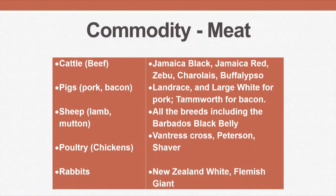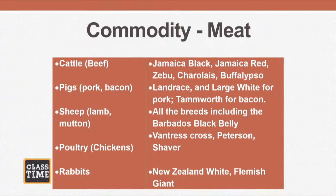The animals used for meat: we have our beef cattle — Jamaica Black, Jamaica Red. For pigs, pork and bacon — we have the Tamworth for bacon and the Large White for pork. For sheep, we are getting lamb and mutton from all the breeds, including the Barbados Black Belly. For our poultry, we are getting from our broilers: the Vantress Cross, the Peterson, and the Shaver. And for rabbits, the two most important ones are the New Zealand White and the Flemish Giant.